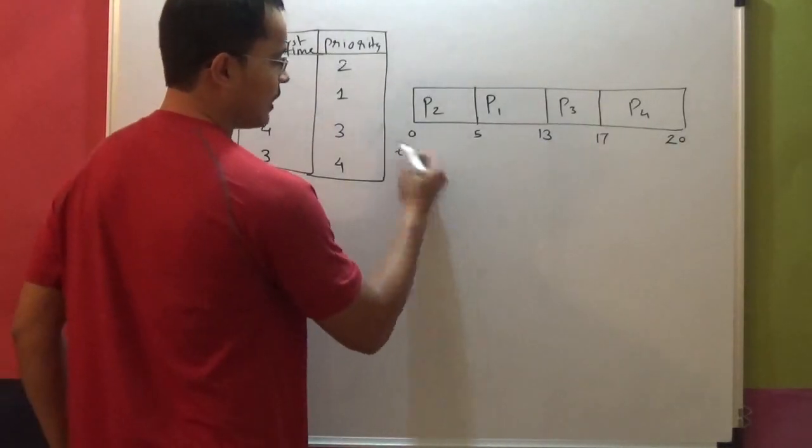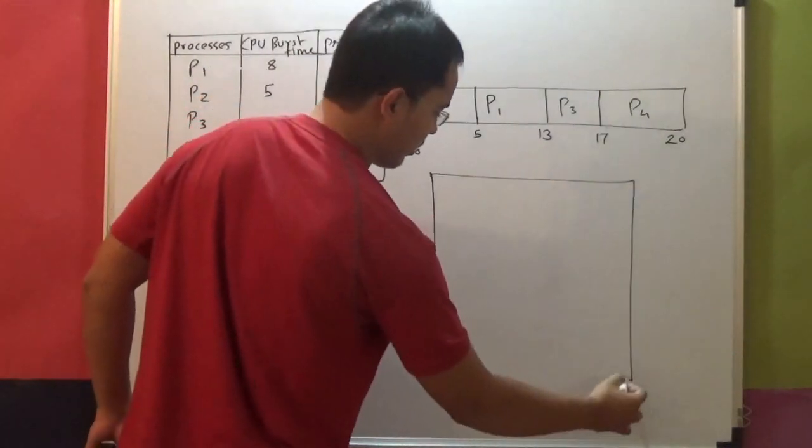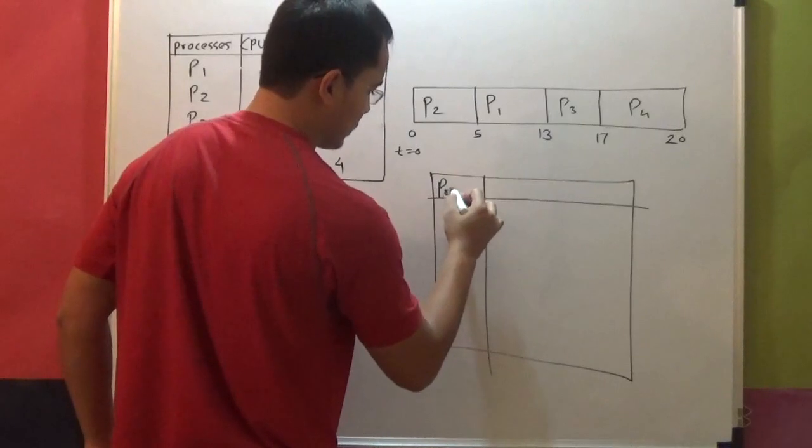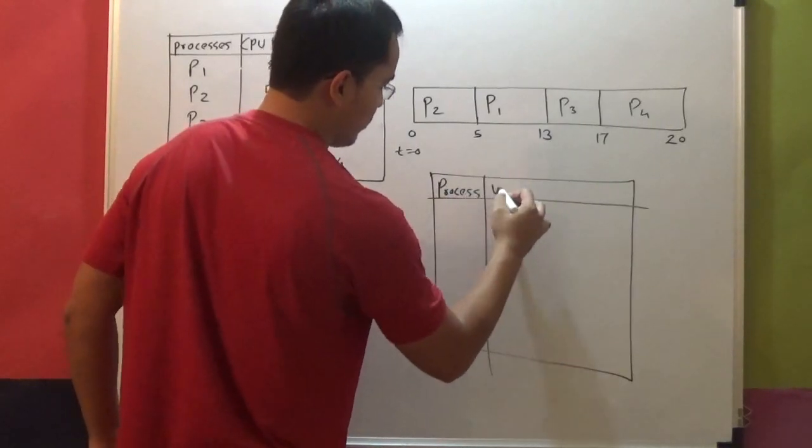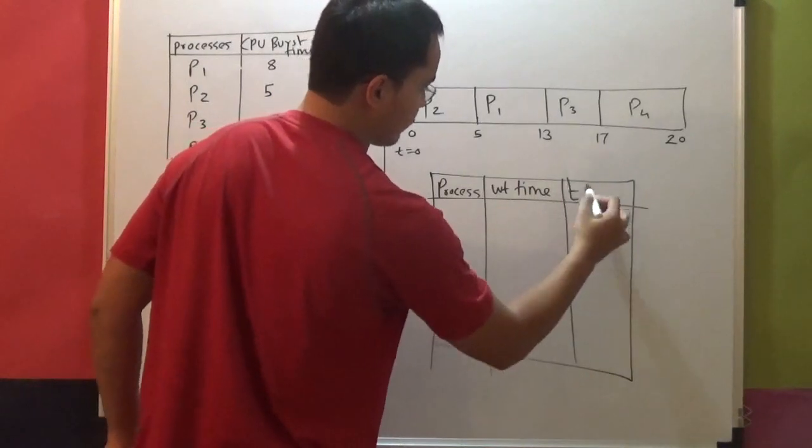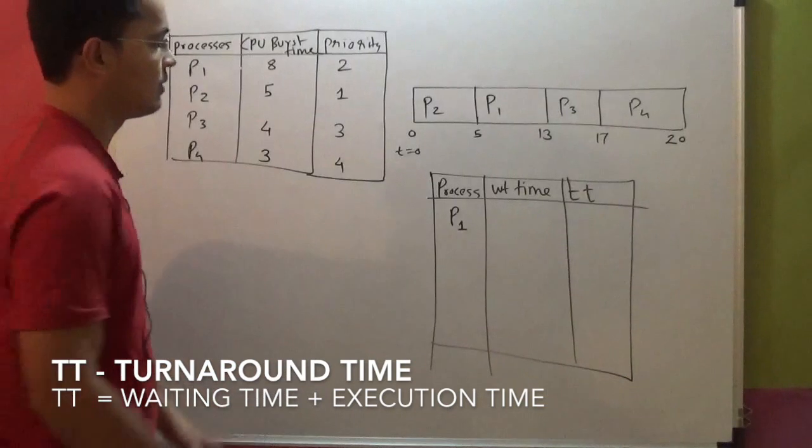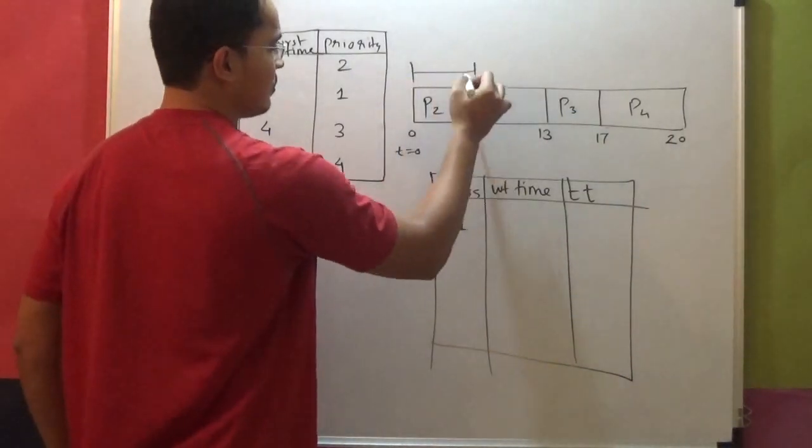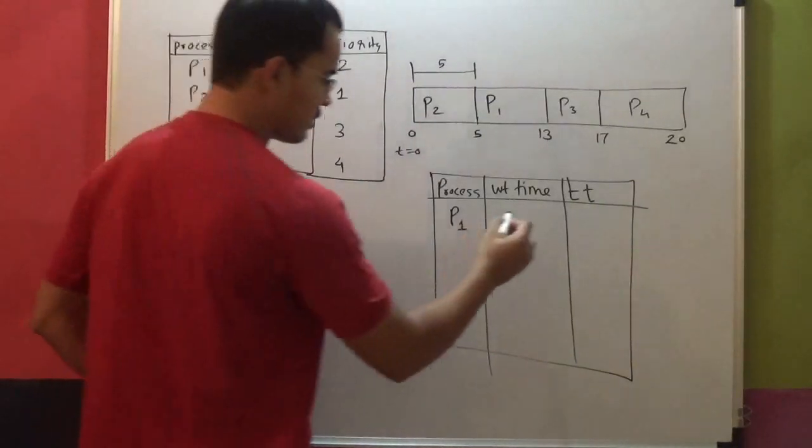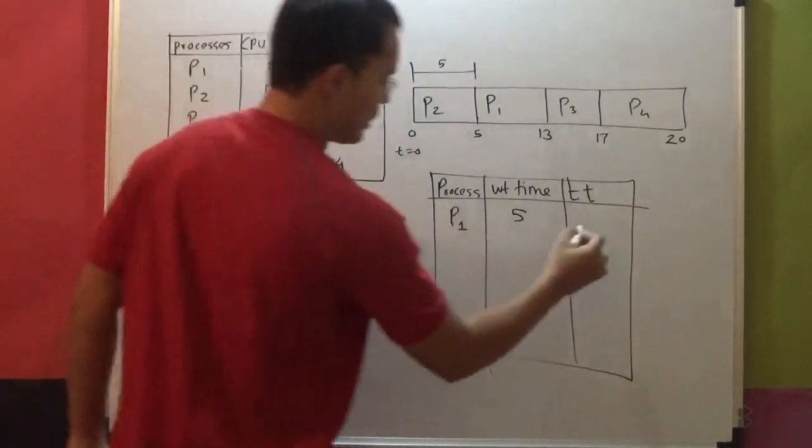Now, let's calculate the turnaround time and waiting time for this process. So process, waiting time and turnaround time. Process P1. What is the waiting time for P1? From the diagram, waiting time is 5. And what is the turnaround time? 5 plus CPU burst time, that is 13.